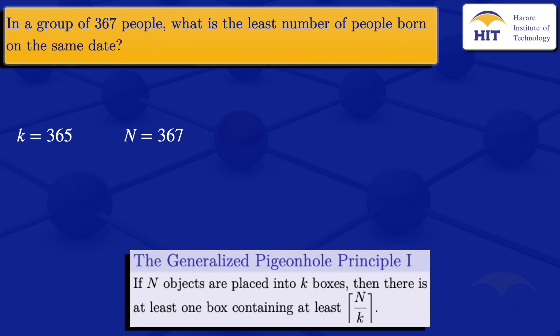So the least number of people using the generalized pigeonhole principle will be the ceiling value of n divided by k. So we are looking at the ceiling value of 367 divided by 365 which gives us 2.